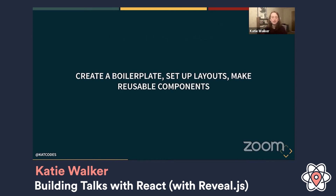I also really like that you can create boilerplates with any web app — you can get a basic version of your app in a nice state with things like linting, minimal but working, and then extend it later. Things like layouts too: with React you can have higher-order components, pass in children, build nice layouts. It works really well with Reveal because sometimes you want two columns on your slide, so you can set up a layout component for that. Similarly, reusable components with props to modify things — it all works really well together.